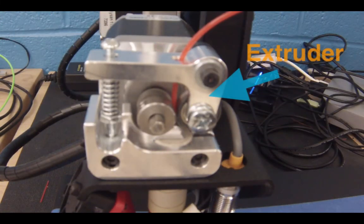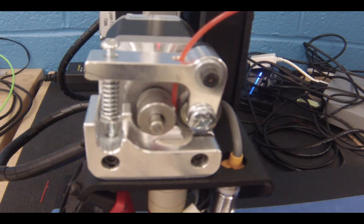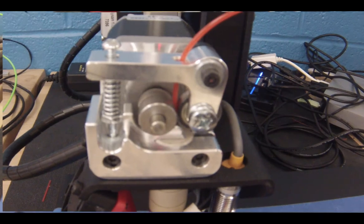The filament is pulled into the printer using the extruder. The extruder is usually some type of gear with teeth on it that pulls or pushes the filament into the hot end to be melted.